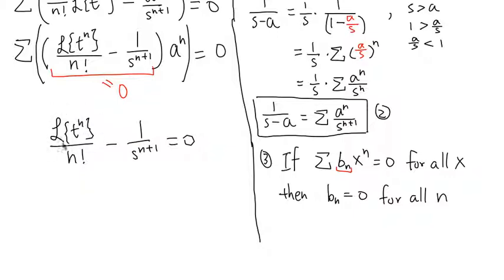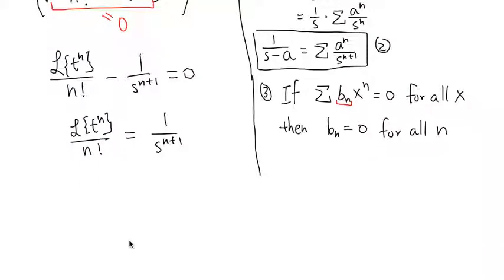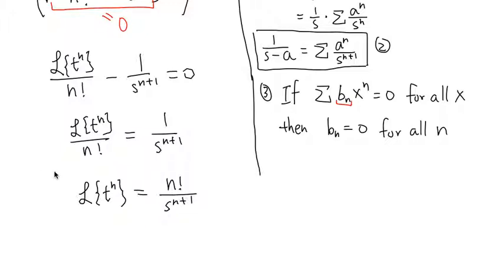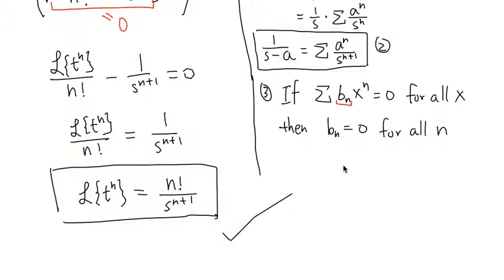Our goal is to find the Laplace of t to the n power. Moving 1 over s^(n+1) to the other side gives Laplace of t^n over n factorial equals 1 over s^(n+1), and multiplying both sides by n factorial gives the final result: the Laplace transform of t to the n power equals n factorial over s to the n plus 1 power.